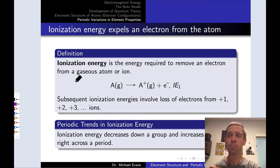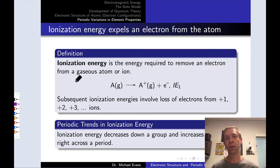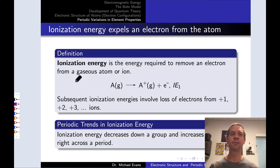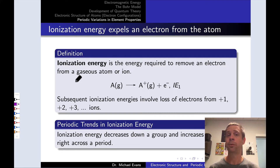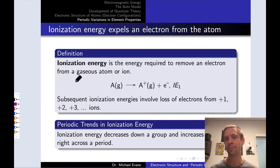These properties are very important, not just for atoms but also for molecules. Any time current flows, any time a material conducts electricity, electrons are hopping from one atom or molecule to another. So ionization and electron acceptance are important properties happening in those substances.